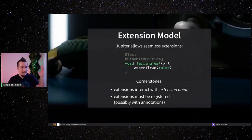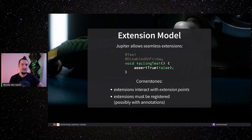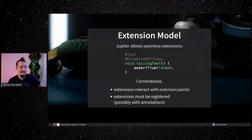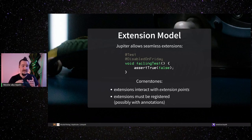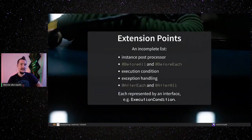How does the extension model work? Jupiter allows really seamless extensions. You can write something like 'disabled on Friday' — even though it probably should be in the official API, it's not. But you can write your extension and it fits in seamlessly. There are two cornerstones: first, extensions interact with so-called extension points; second, your extension needs to be registered, for example with annotations. Here's an incomplete list of extension points: instance post processor, before all, before each, execution condition, exception handling, after each, after all, and more. Each extension point corresponds to an interface.